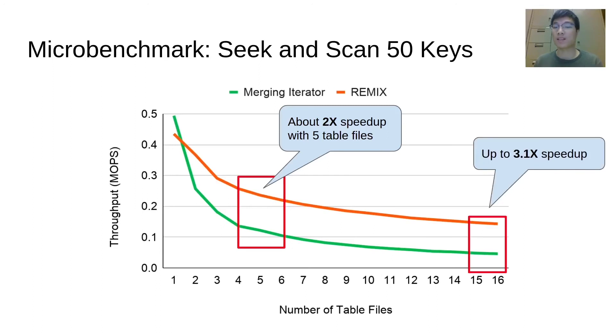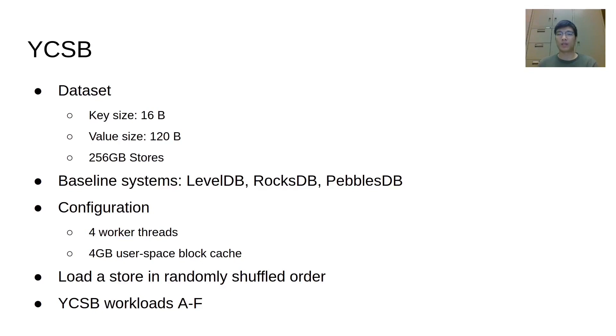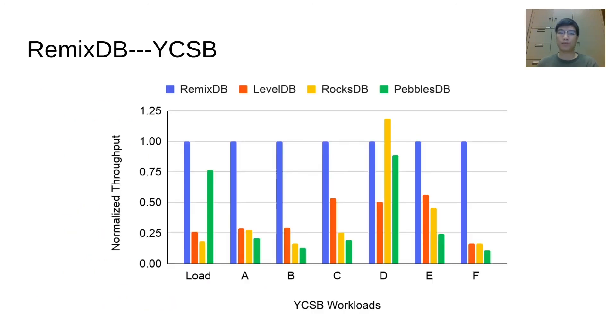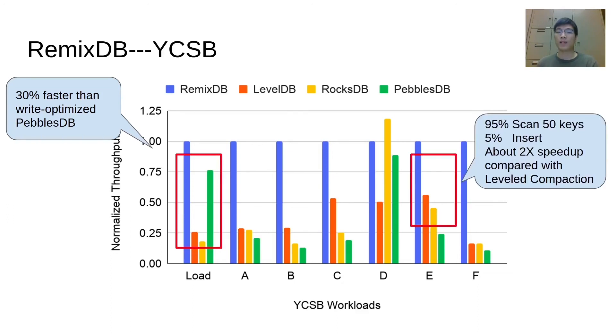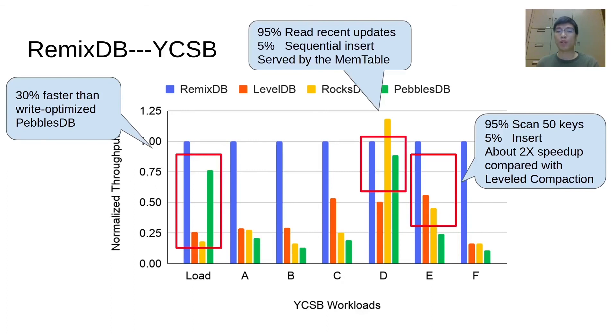To evaluate the performance of RemixDB, we compare RemixDB with LevelDB, RocksDB, and PebblesDB. We load each system with 256GB of key value pairs in random order, then run the YCSB workloads A to F. RemixDB load throughput is about 30% faster than PebblesDB, which also adopts the tiered compaction policy. The workload E mostly contains range queries. RemixDB achieves up to 2 times speedup compared with the systems that use leveled compaction. YCSB workload D mainly performs point queries to the most recently inserted keys. Most of the queries could be answered from the in-memory buffer. Hence, RemixDB does not show a significant improvement under workload D.